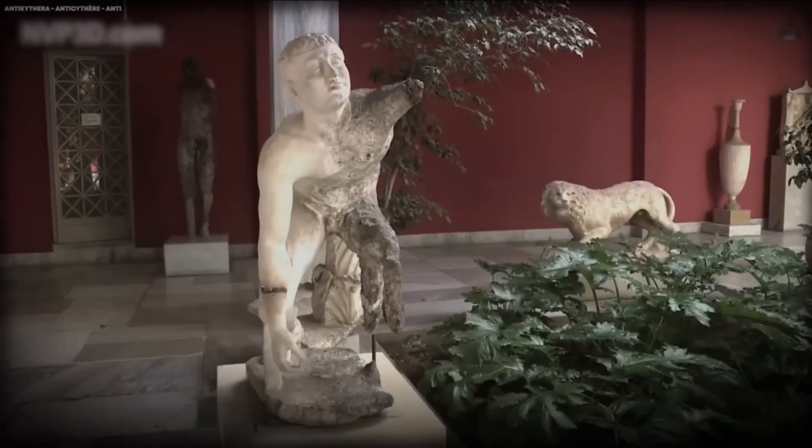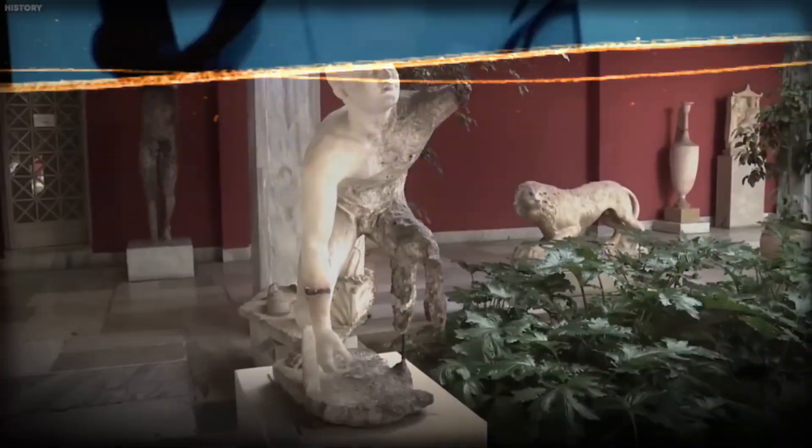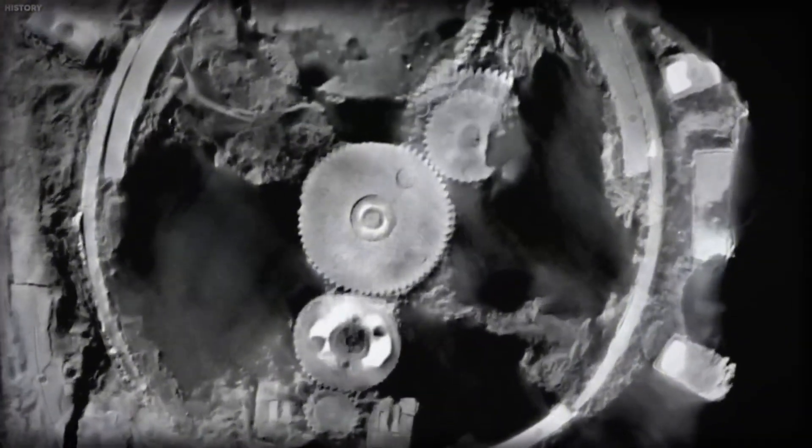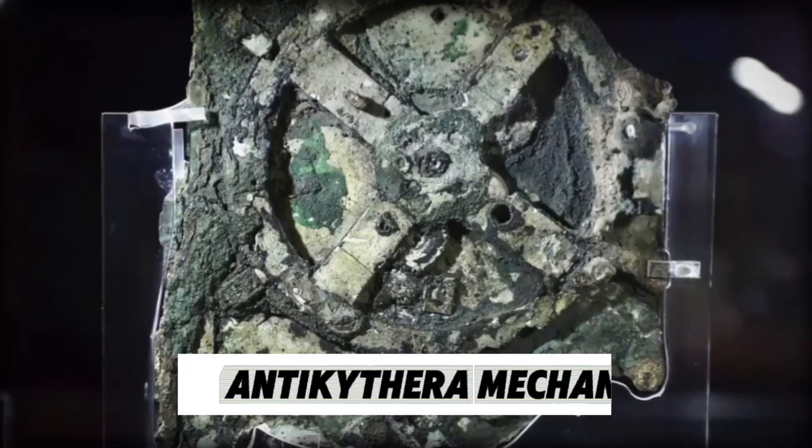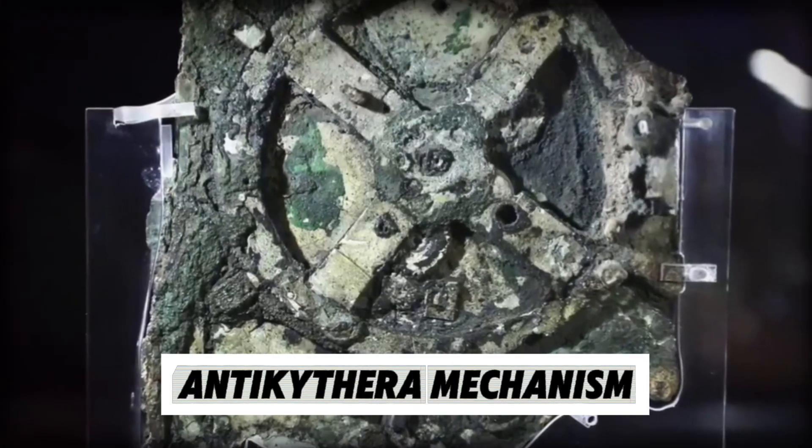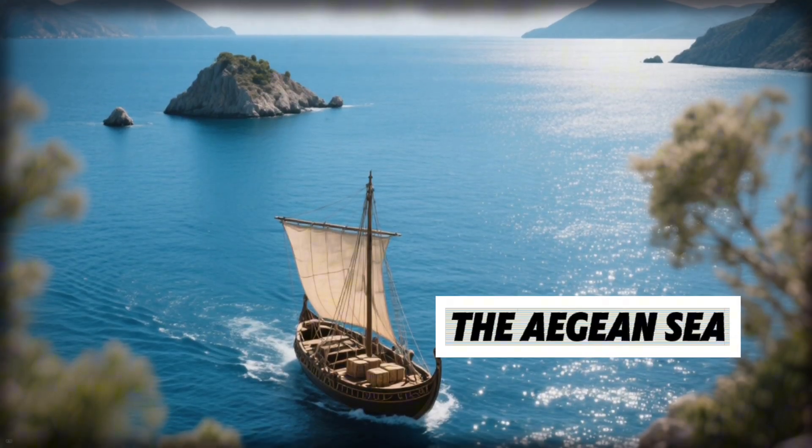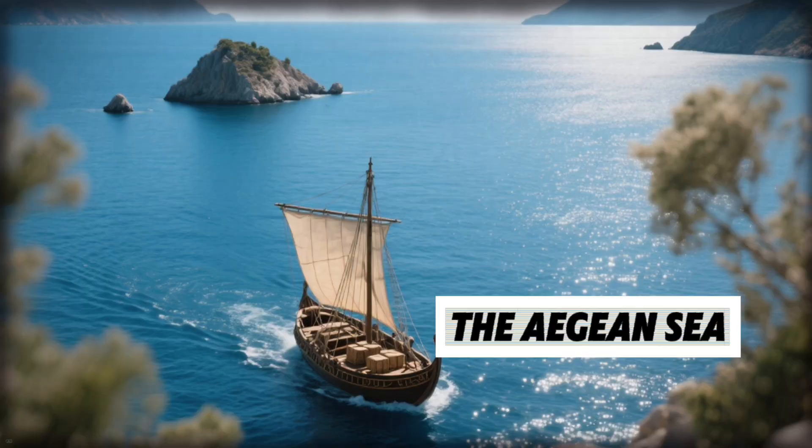It made no sense. No other object from ancient Greece, or anywhere from that age, had ever shown such precision. Such mechanical purpose. What scholars would later call the Antikythera mechanism was older than the ship that carried it. Carbon dating and contextual evidence placed its creation somewhere around 150 to 100 BC, meaning it had been sailing the Aegean long before Rome ruled the Mediterranean.